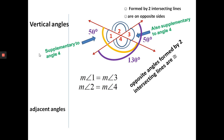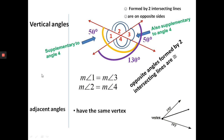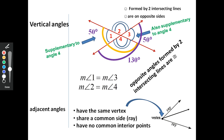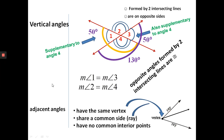The next topic is adjacent angles. For two angles to be adjacent, three things have to be true: one, they have to have the same vertex; two, they have to share a common side or common ray; and three, they have to have no common interior points. Looking at the example, there's the vertex shared by angle one and angle two, and here is the side that they both share.